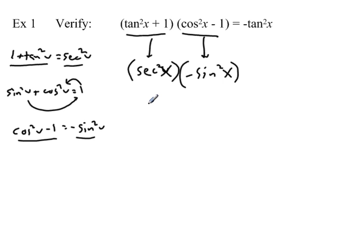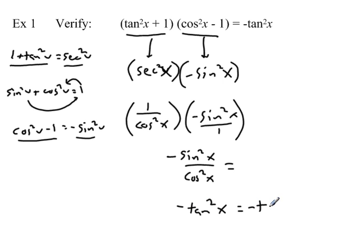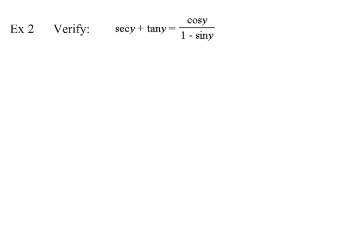Now let's convert to sine and cosine. Secant squared is the same as one over cosine squared of x. Multiplying the two together gives negative sine squared of x on top and cosine squared of x on the bottom. Since sine over cosine equals tangent, this equals negative tangent squared of x, which is what we're trying to get. We've shown algebraically that the left side equals the right side.